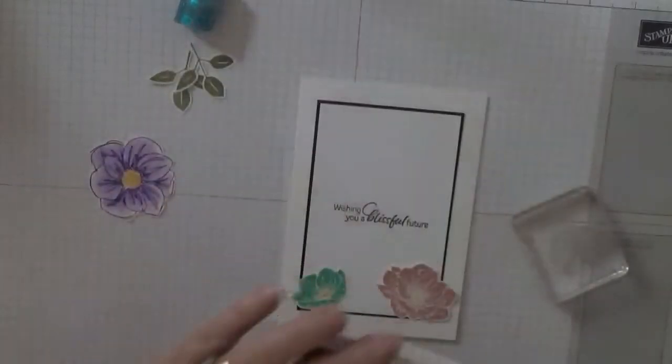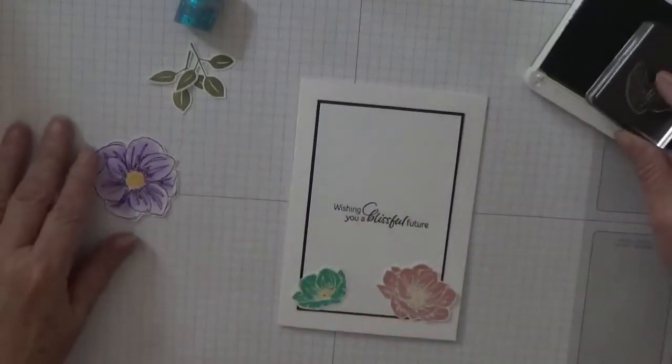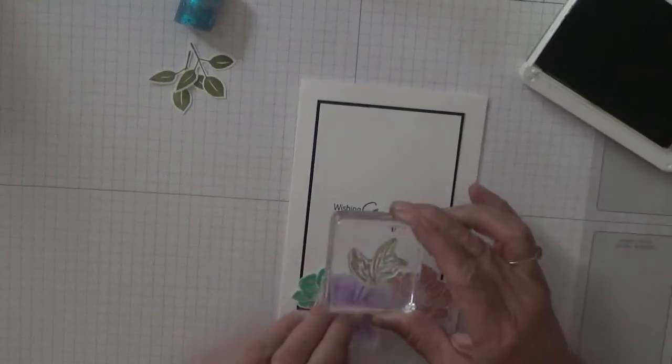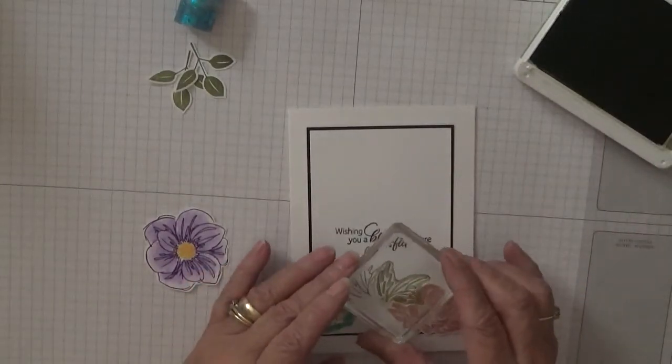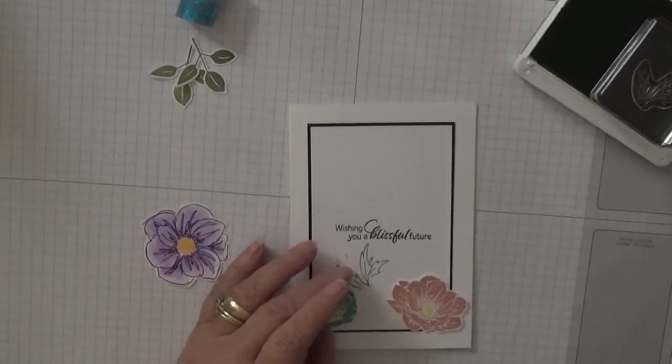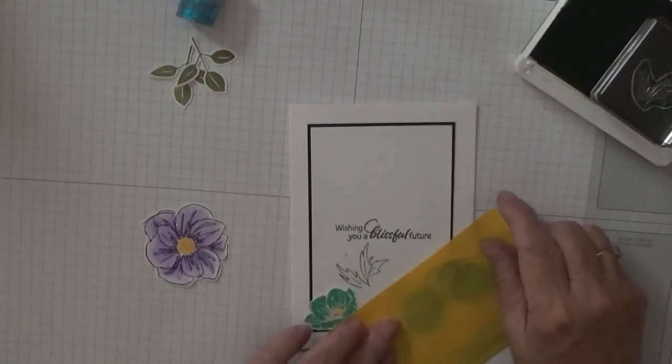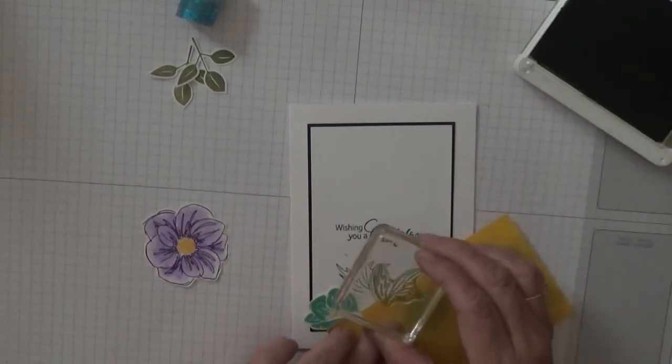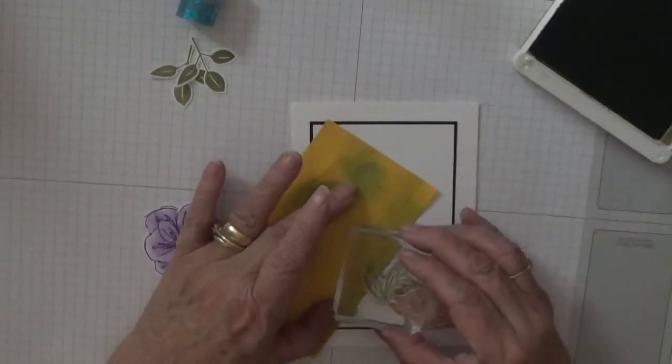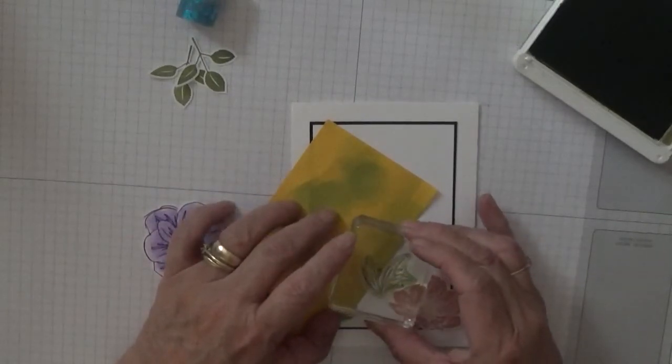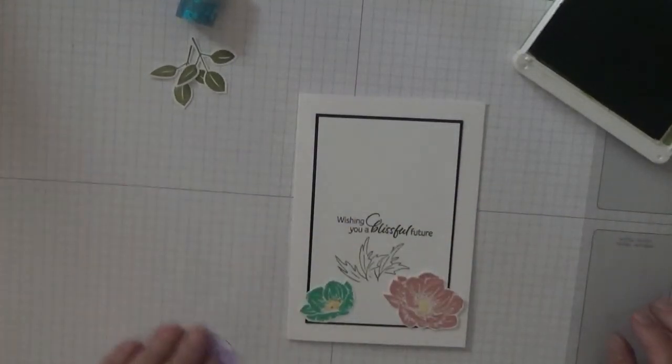And then with Old Olive and this funny leaf stamp, we're going to stamp one there and one. Let's get a bit of paper to protect our flower. We're going to stamp that one there. And then this will sit there.